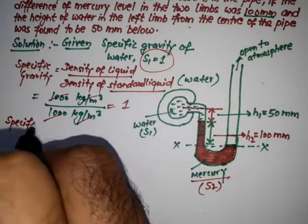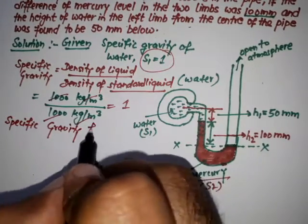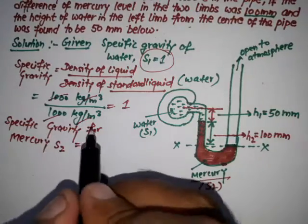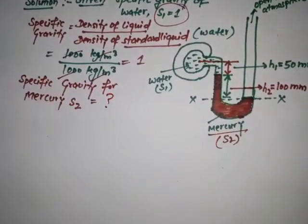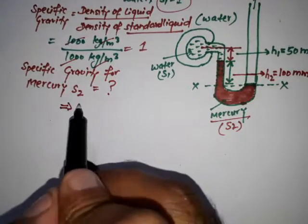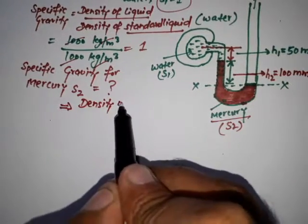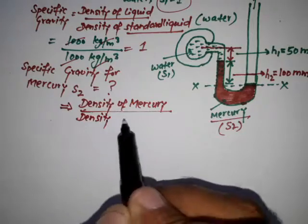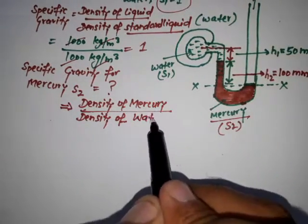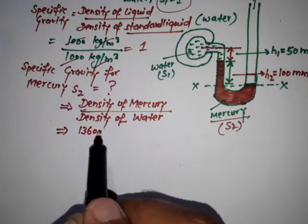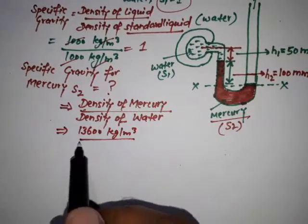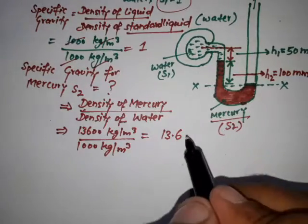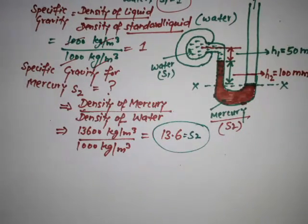The specific gravity for mercury is S2. Mercury is also a liquid, so S2 equals density of mercury divided by density of the standard liquid (water). Density of mercury is 13,600 kg/m³, and density of water is 1000 kg/m³. Therefore S2 equals 13.6.